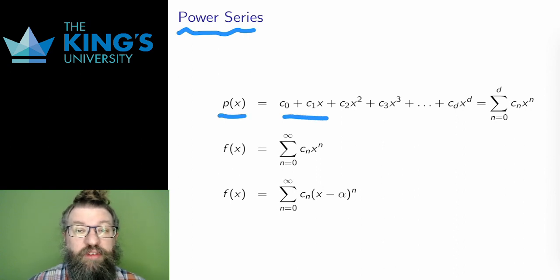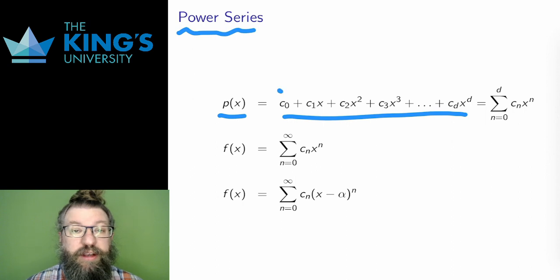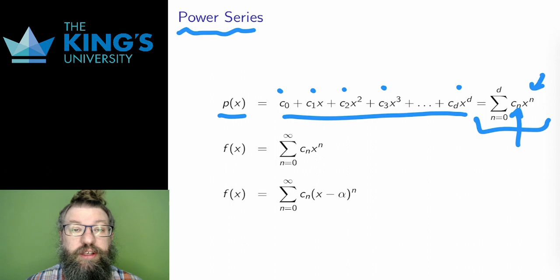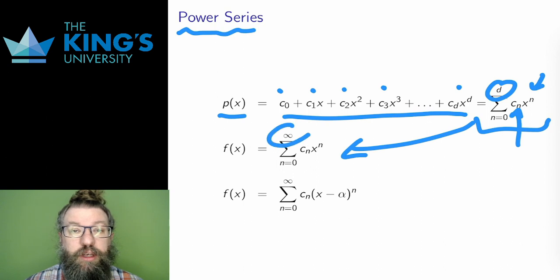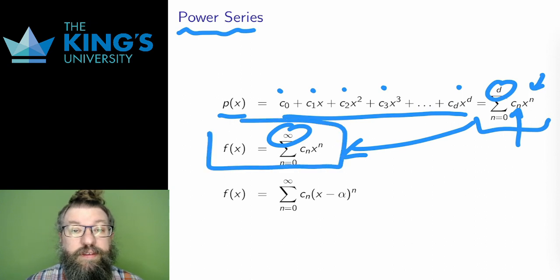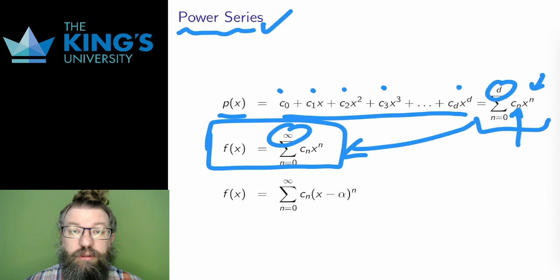A polynomial is a sum of whole powers of a variable with various coefficients: c0 plus c1 x plus c2 x squared, up to some c_d times x to the d. The number d is the degree of the polynomial. I can write a polynomial with sigma notation — each term has a power of the variable x to the n and a coefficient c_n, and the sum stops at degree d. What if I didn't stop? What if I just let the polynomial keep going, adding more and more terms with no ending at all? Then, instead of stopping at degree d, I get an infinite series that goes on forever. This is a power series — it's essentially an infinite degree polynomial. x is still the variable, and the terms still have a power of the variable x^n and a coefficient c_n.